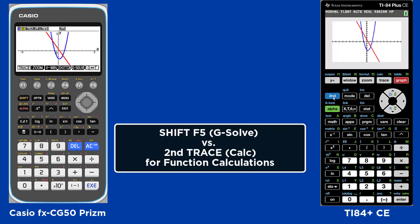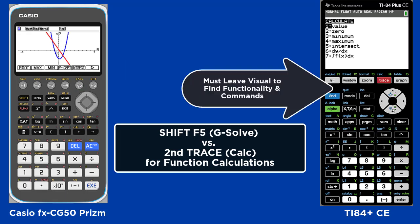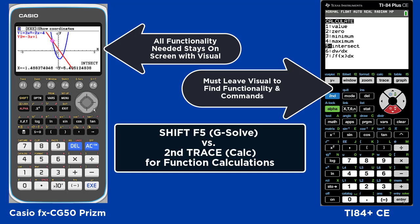Once you see the visual and you want to do calculations, you're going to hit Shift F5 or Second Trace. In the TI, you must leave the visual to find functionality and commands. In the Casio, all functionality stays on the screen with the visual.